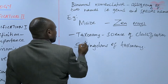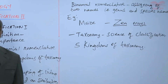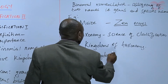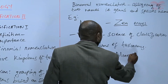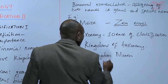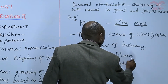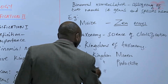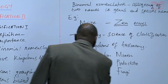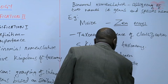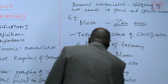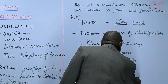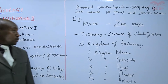The five kingdoms of taxonomy are: number one, kingdom Monera; number two, kingdom Protocytista; number three, kingdom Fungi; number four, kingdom Plantae; and number five, kingdom Animalia. Those are the five kingdoms of taxonomy.